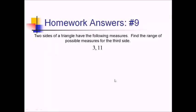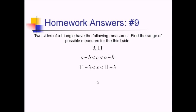For number nine, we have two sides of a triangle and want the range of measures for the third side. The third side is going to be between the difference and the sum of those two sides. So our x will be between 11 minus 3 and 11 plus 3, or between 8 and 14.